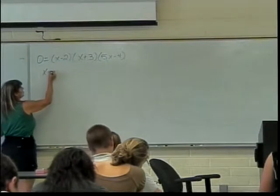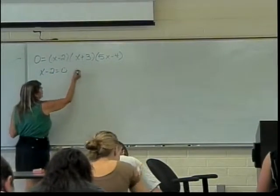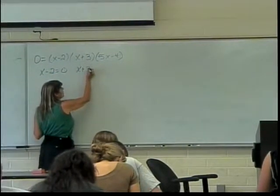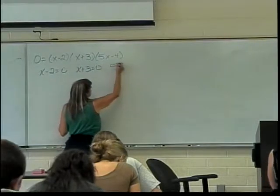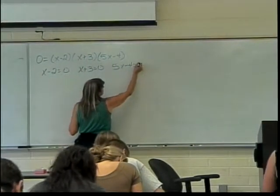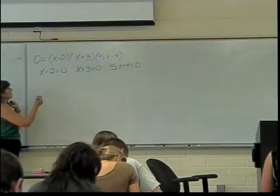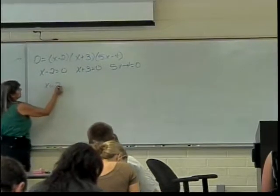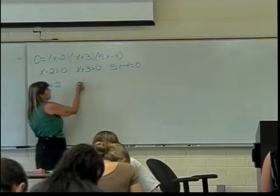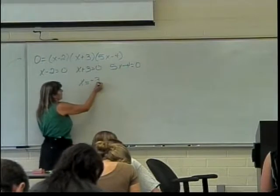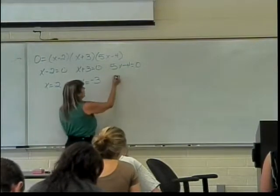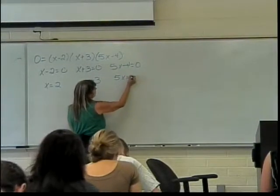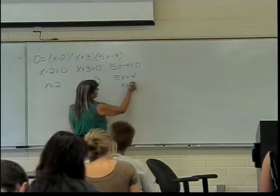That means either x minus two equals zero, or x plus three equals zero, or five x minus four equals zero. If x minus two equals zero, this gives us x equals two. If x plus three equals zero, this gives us x equals negative three. And if this one's equal to zero, we have five x equals four, or x equals four fifths.